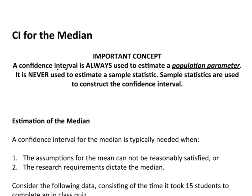...that confidence intervals are always used to estimate a population parameter. They're never used to estimate sample statistics. Sample statistics are used to construct a confidence interval, but we don't estimate sample statistics. The idea of estimating a sample statistic just doesn't make any sense. You calculate sample statistics from your data. There's nothing to estimate. There it is. You have it in front of you.